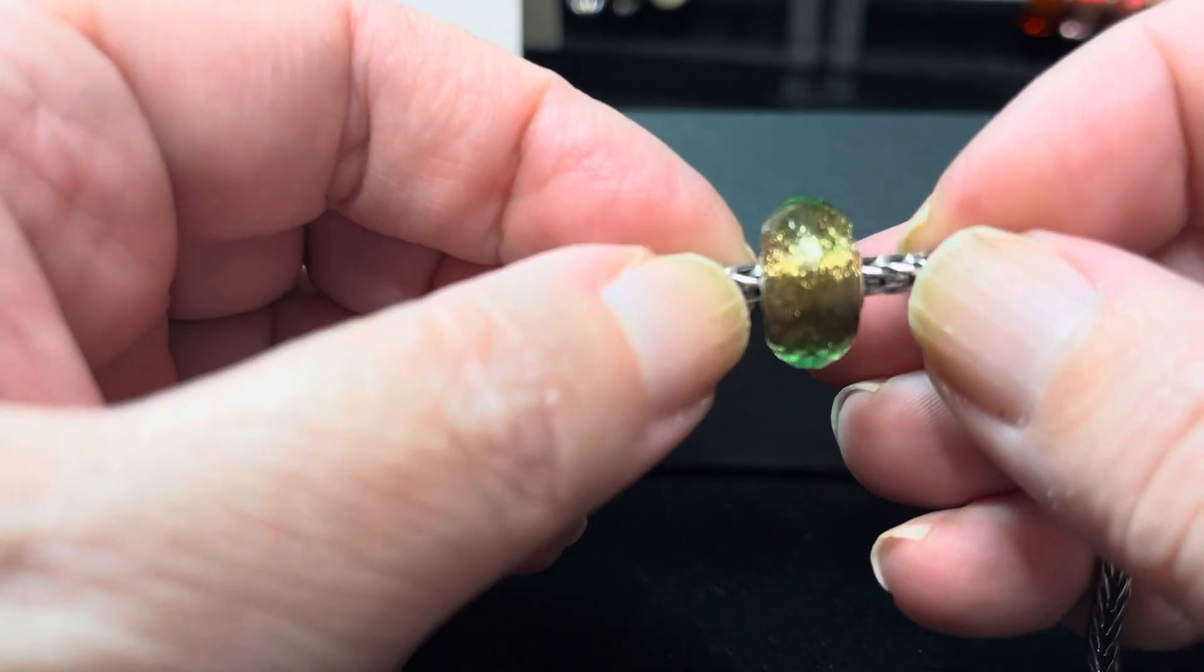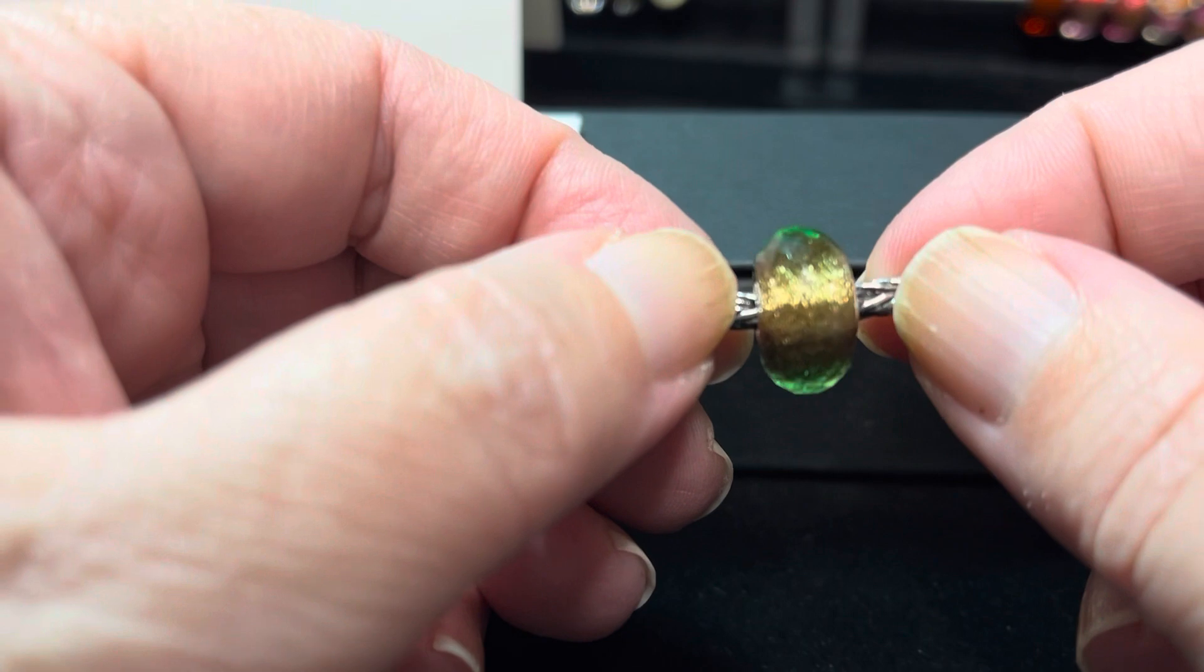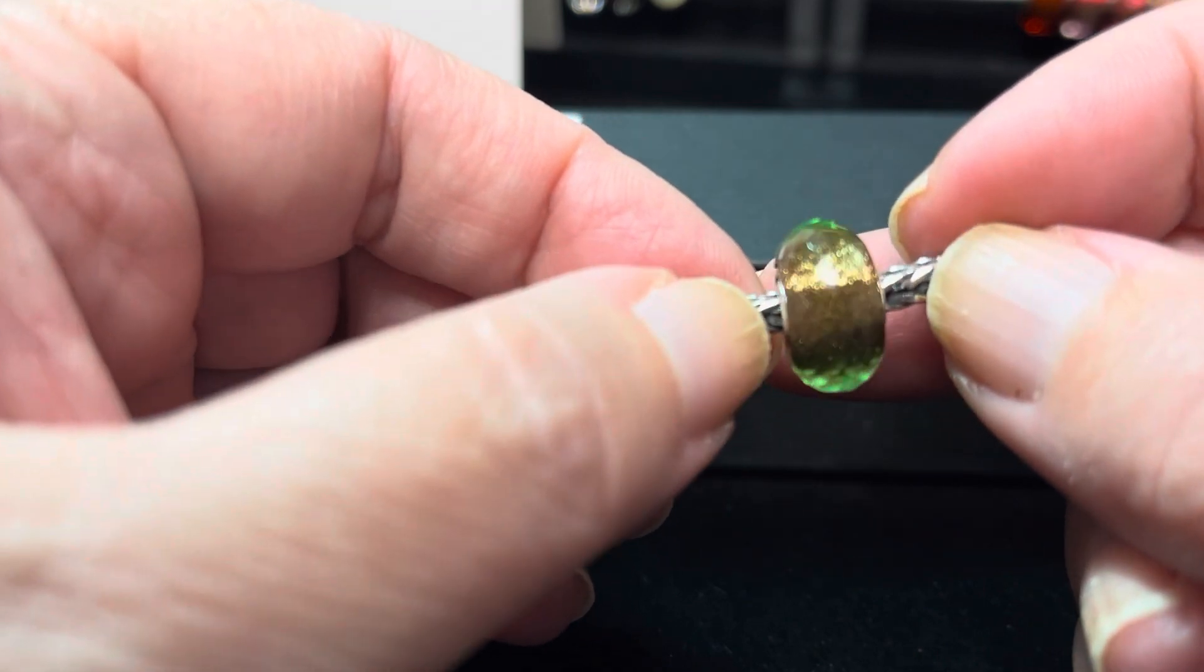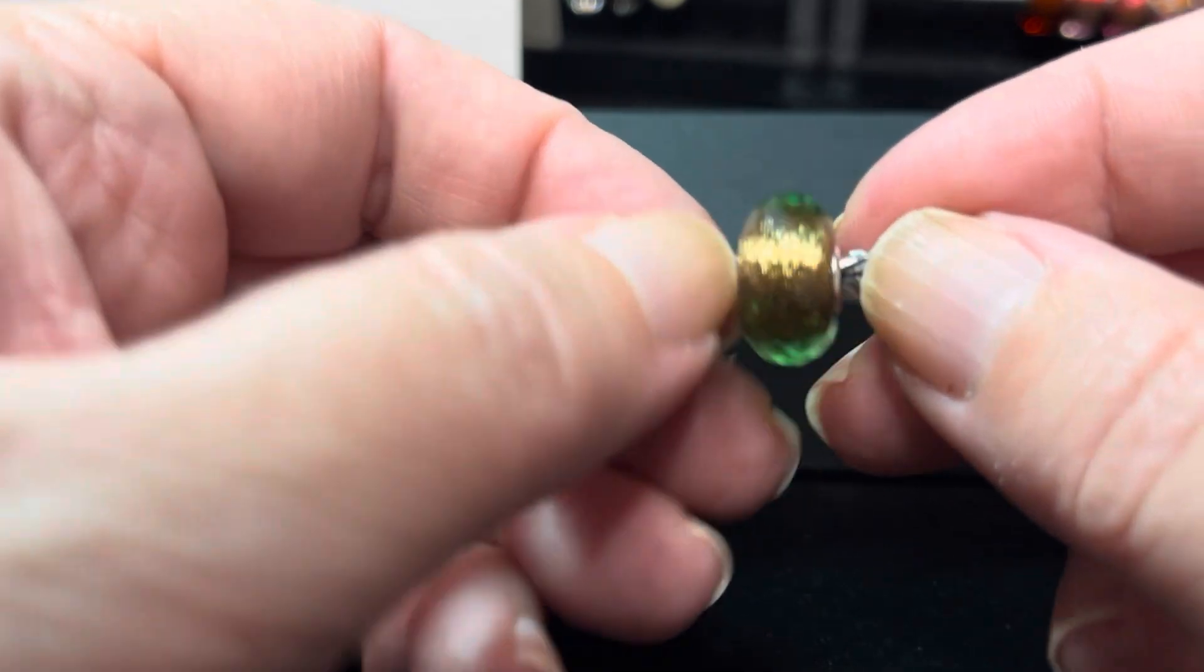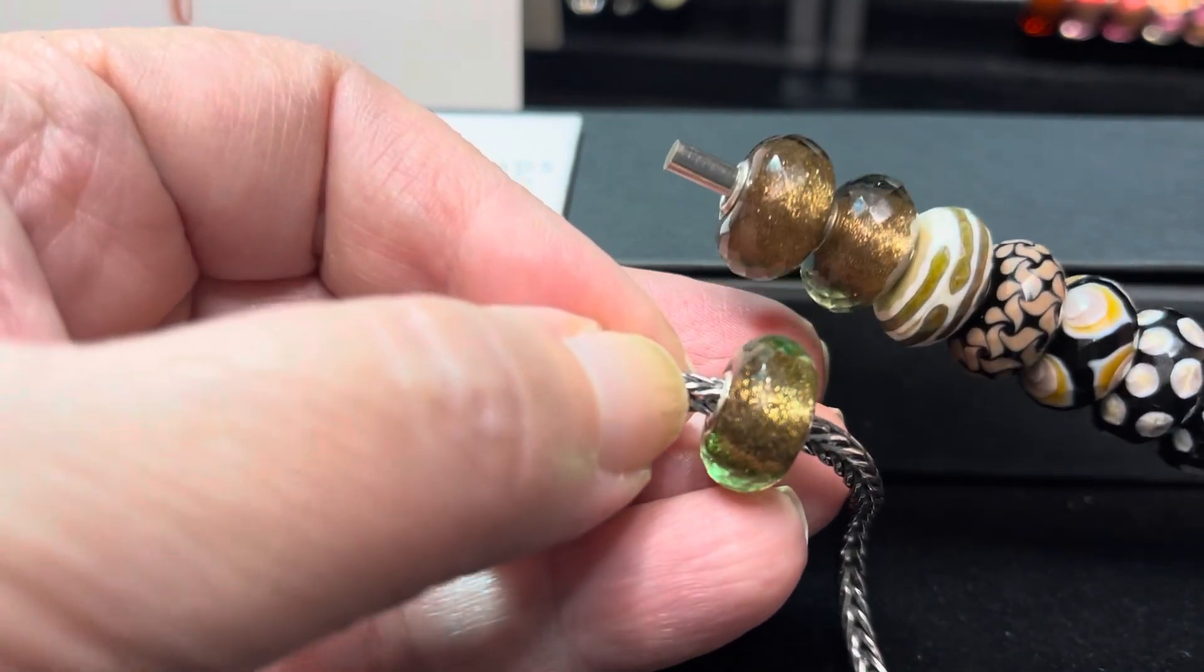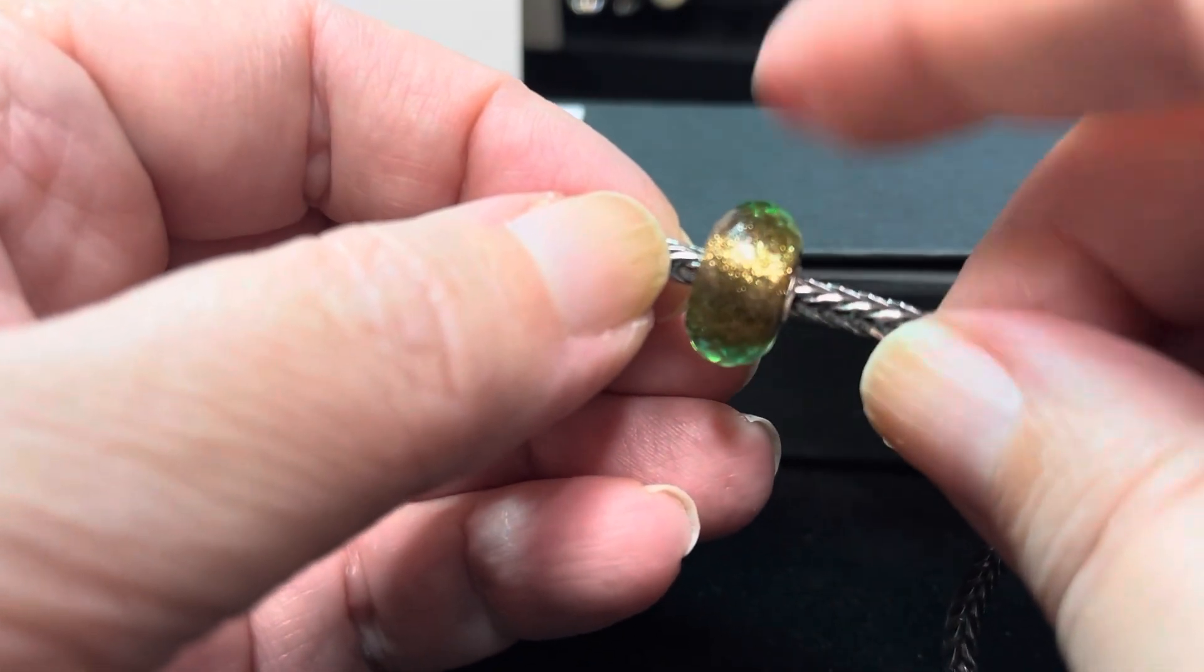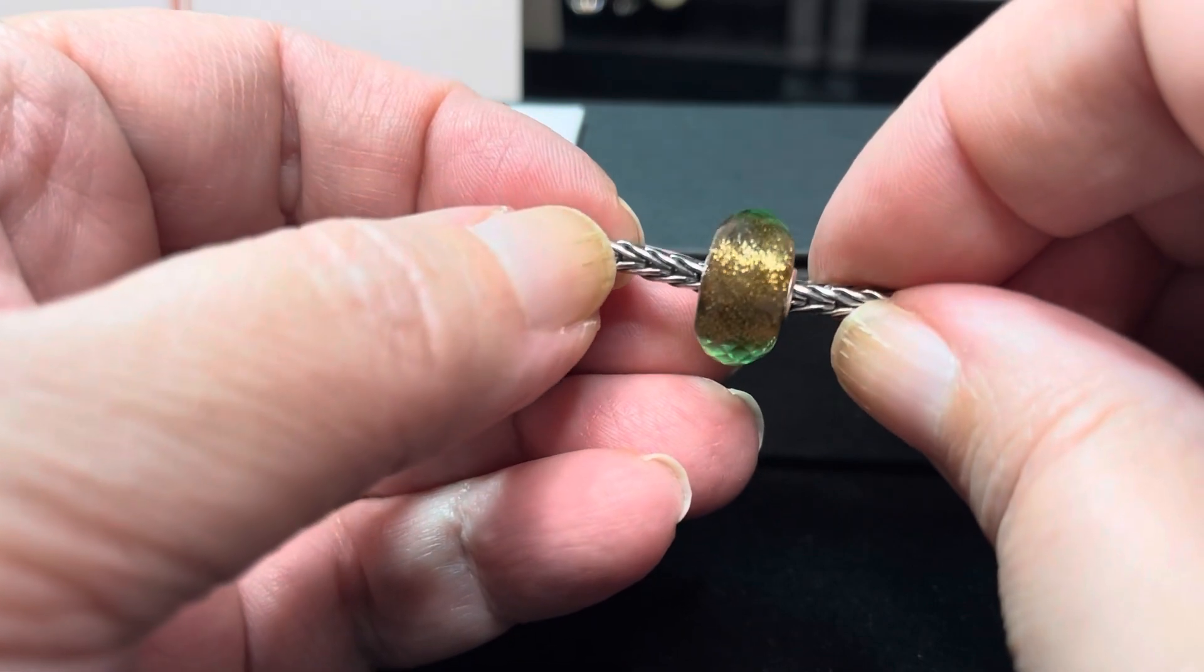This glass bead here is very similar to Sense of Shimmer. Sense of Shimmer has a little bit more of an olive green overlay, and this is a brighter, almost spring green, but it does have that same glittery core. In fact, here is Sense of Shimmer just so you can see the difference in the green. I think they'll work really well together.